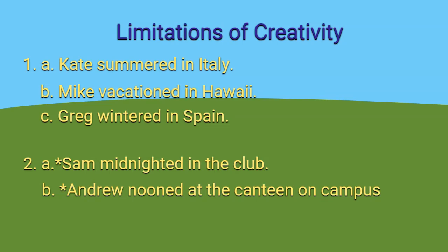However, only set one is acceptable. Can you guess why? For the first three words — summered, vacationed, wintered — they represent a long period of time, like two weeks or three months. But midnighted and nooned are a short period of time, so it's not common to use them as verbs.